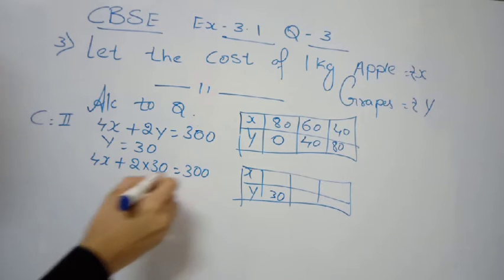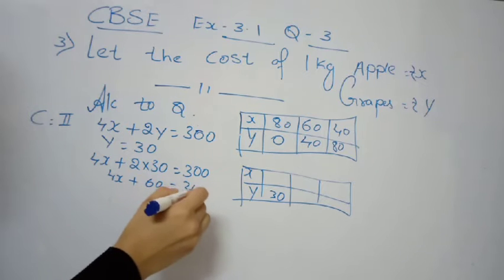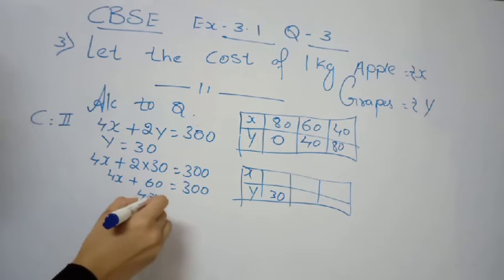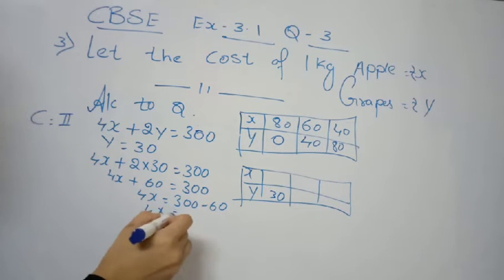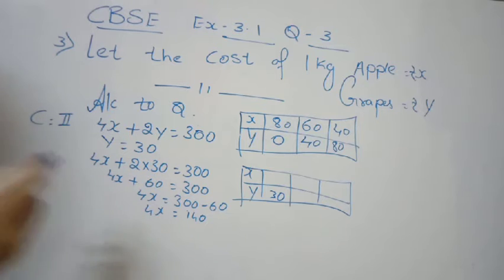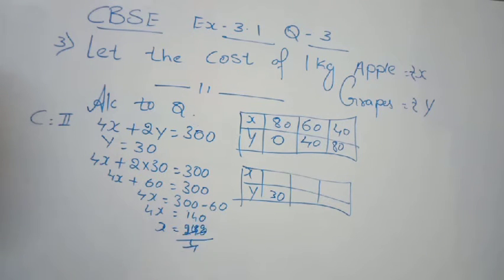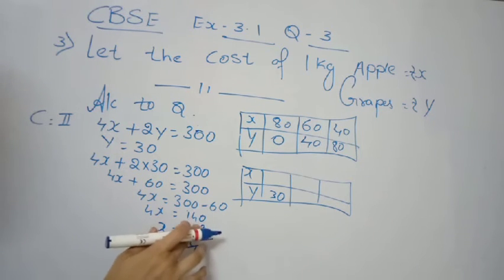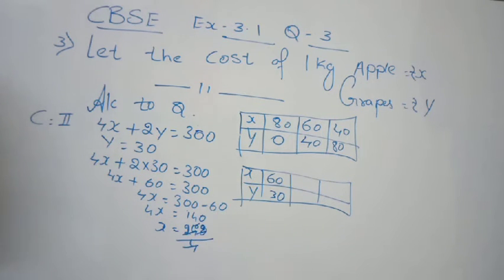For the second condition table, let y equal 30. Substituting: 4x plus 2 into 30 equals 300. So 4x plus 60 equals 300, giving 4x equals 300 minus 60 equals 240. Therefore x equals 240 divided by 4, which equals 60. So when y is 30, x is 60 rupees.